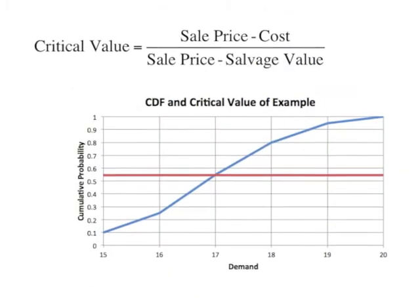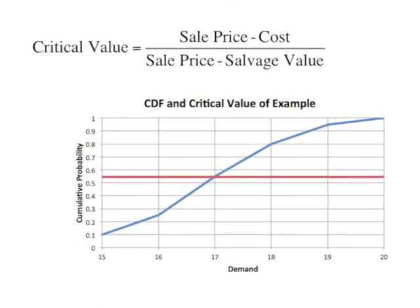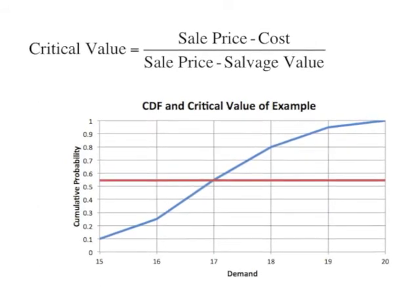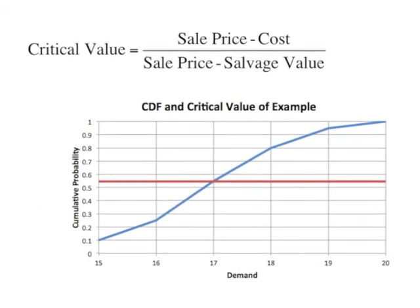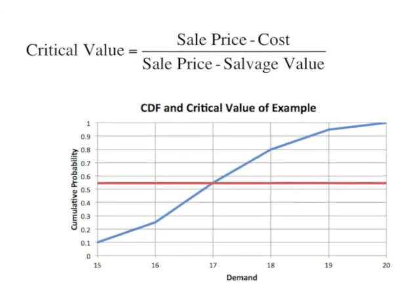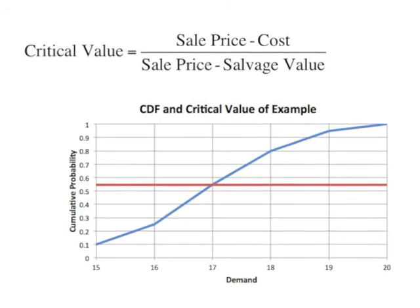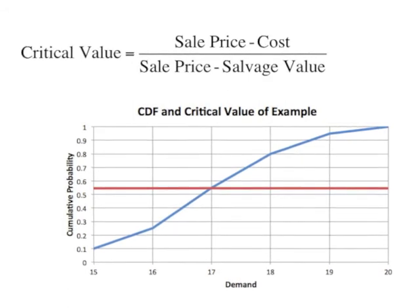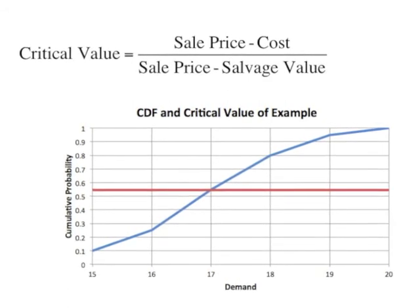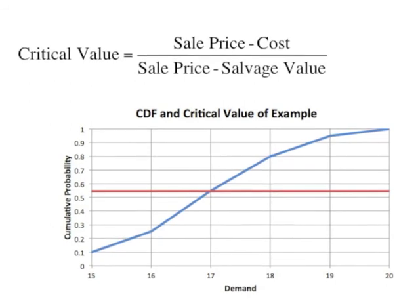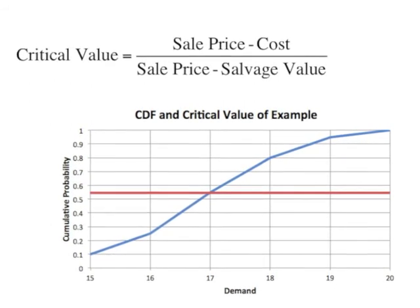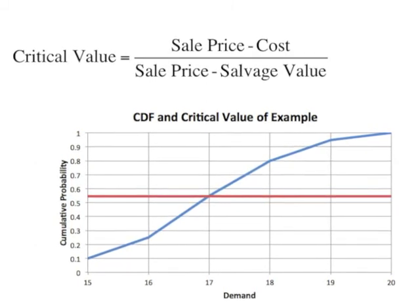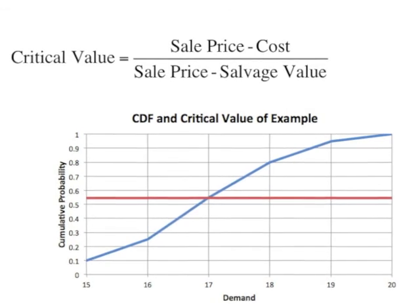There is however an analytic closed-form solution that does not require enumerating all possibilities. We can calculate a ratio of costs called the critical value. This is calculated as (sale price minus cost) divided by (sale price minus salvage value). In the graph, the critical value is represented by the red line and the cumulative distribution of demand by the blue line. The solution is obtained by finding the closest integer of the CDF that is equal to or greater than this critical value. You can see that this agrees with the previous result: the optimal number to order is 17.